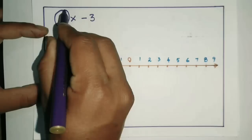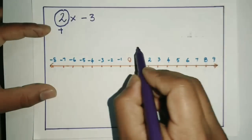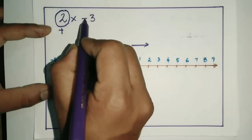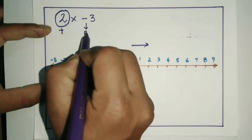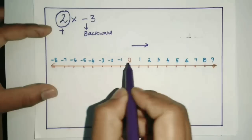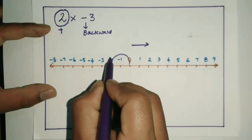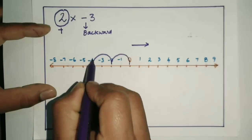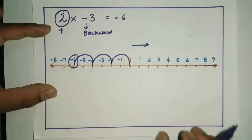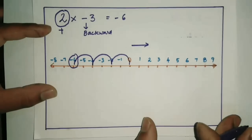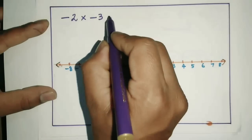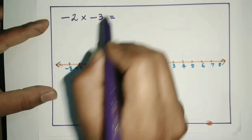Now consider 2 multiplied by minus 3. Here 2 is positive, so your direction is positive — you are looking towards your right. Minus 3 is negative, so your movement is backward. Moving backward three times of 2 steps each gives an answer of minus 6.